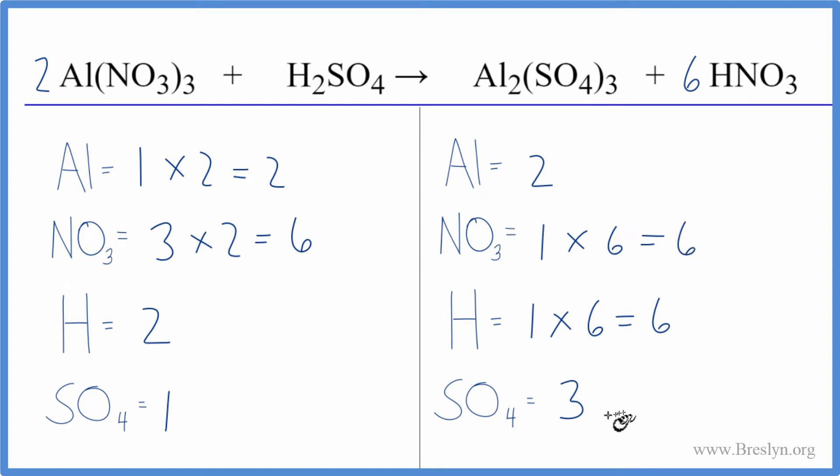Let's fix the hydrogens next. We could put a three in front of the sulfuric acid - that would balance the hydrogens, might even balance the sulfates. Two times three, that gives us six. And then one sulfate times three, yep, that gives us three, and we're done. This equation is balanced.